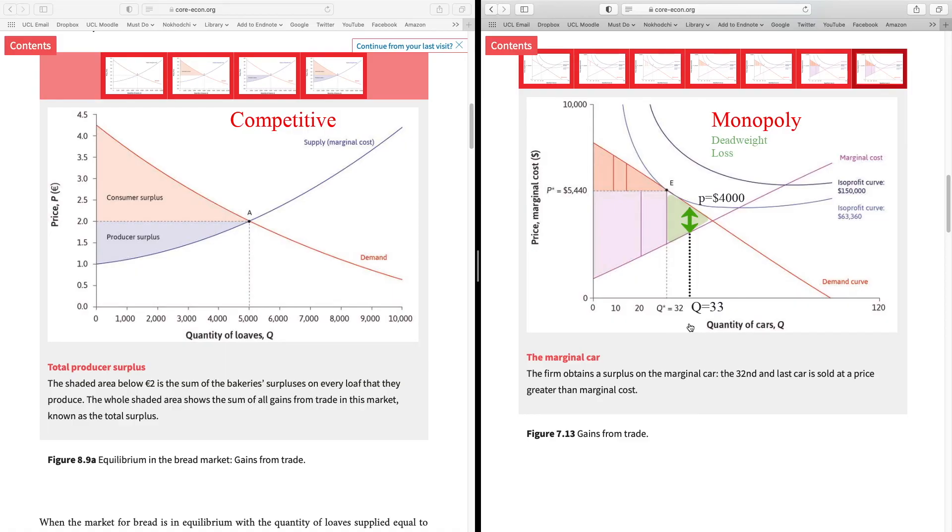But Beautiful Car never produces the 33rd car. Why? Because if they want to serve that customer, they have to lower their price for all of their cars. And they end up making less profit on the other 32 cars. And in this way, they end up making a lower total profit.